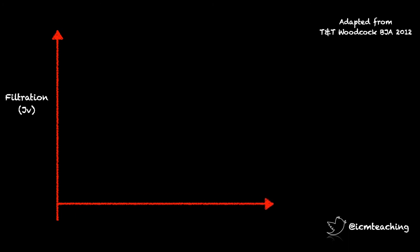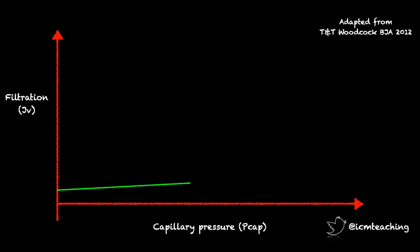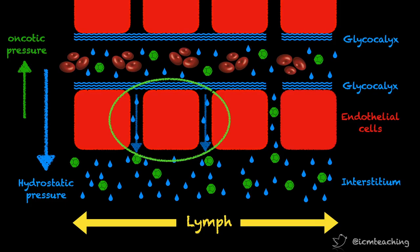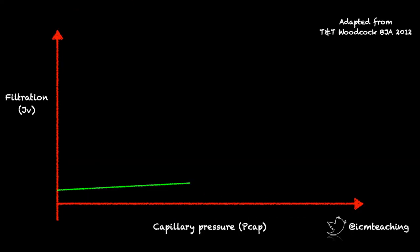Now remember filtration normally occurs at pretty low levels, because of the high colloid osmotic pressure gradient across the glycocalyx opposing hydrostatic pressure. We can plot this on a graph of filtration by capillary pressure. As well as the filtration rate being low, the increase in filtration with increasing capillary pressures is also initially low, as you can see here with a relatively flat line. This is because, as flow of fluid through the endothelial cleft increases, the small amount of albumin there is washed out, so the oncotic pressure gradient opposing filtration increases. Once all the albumin has been washed out, there can be no further increase in the colloid osmotic pressure gradient, and filtration rapidly increases. This transition point is known as the J-point, as described by Tom Woodcock.